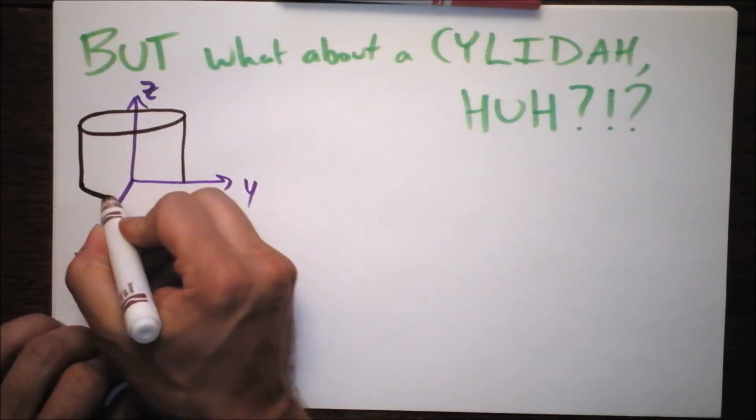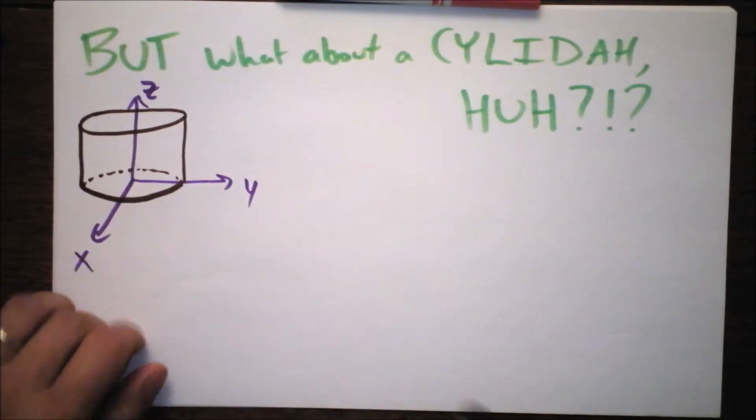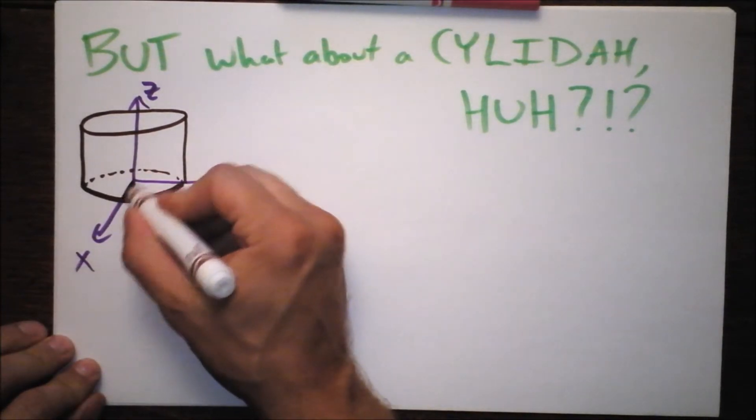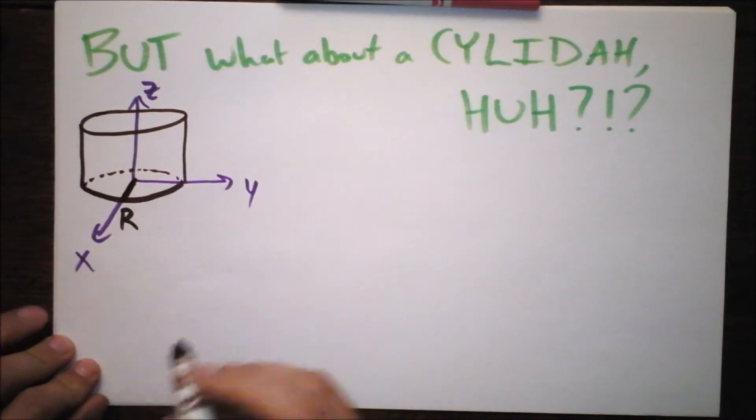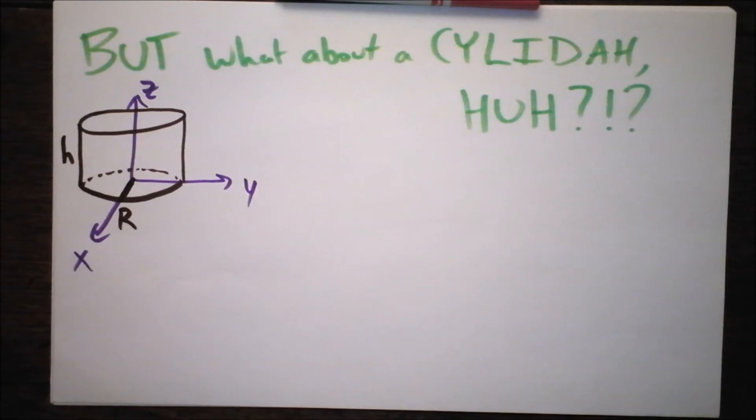And then you're going to have a little bit of this stuff going on and a little bit of dotting back behind to show you that it has some volume. It has a radius of R and I'm going to give it a height that we'll call H, obviously, for height.